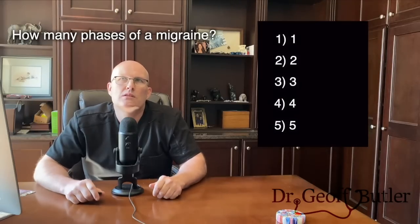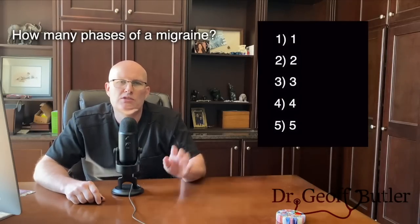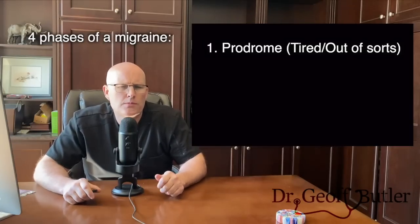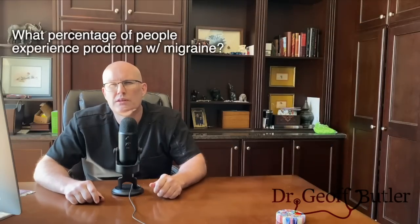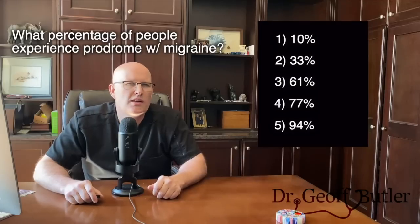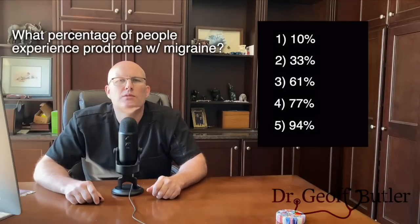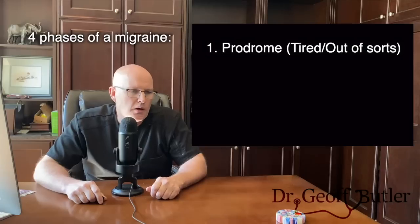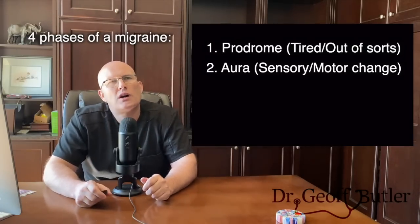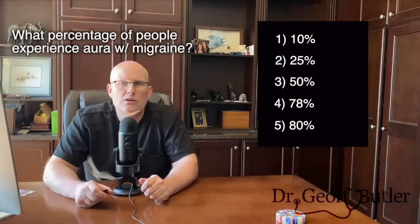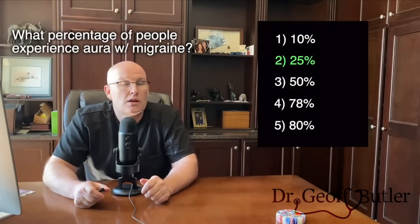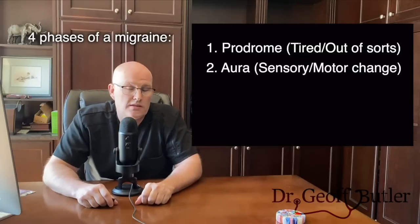With migraines, there are two things I always tell students to look at. First, recognize the four phases of a migraine. The prodrome occurs a few hours or the day beforehand — patients feel tired, moody, or just not themselves; about 77% of people relate that. The second phase is the aura, where people have a neurological symptom — sensory or motor — but only about 25% of people get that, and it's not present in this case.